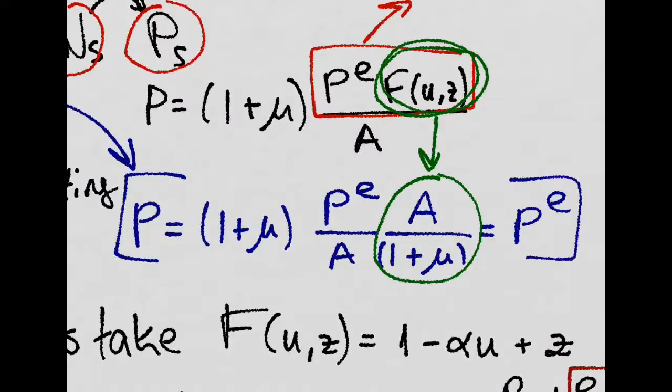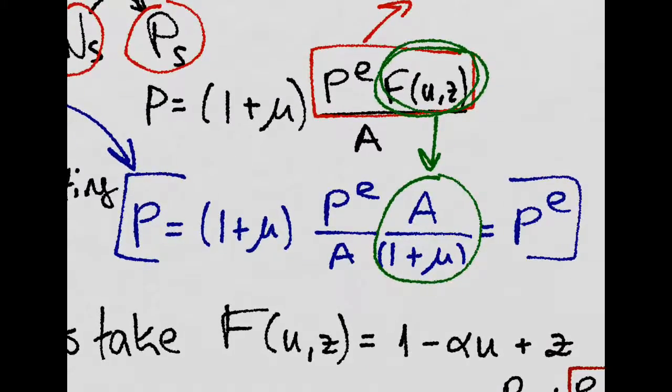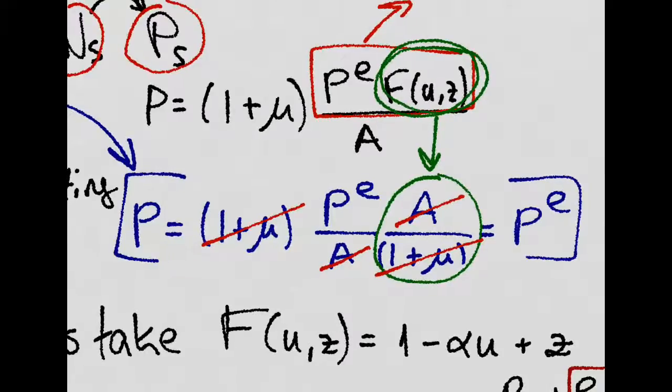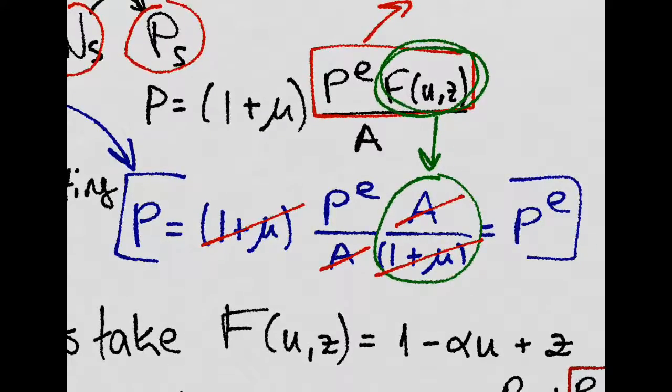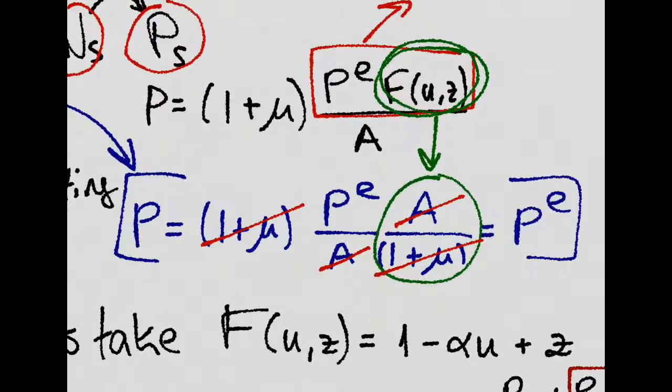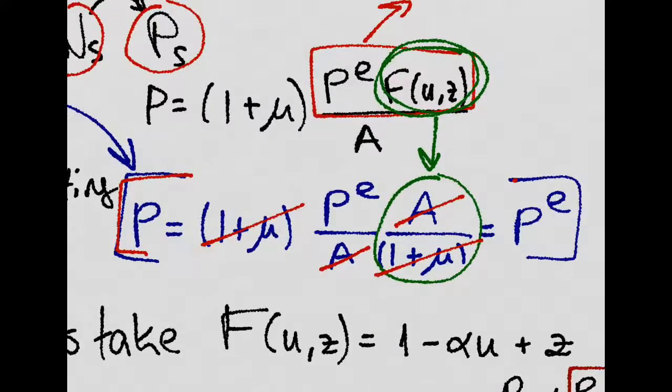So now we just substitute, and we realize that things cancel out, and we are left with prices equal to the expected level of prices.